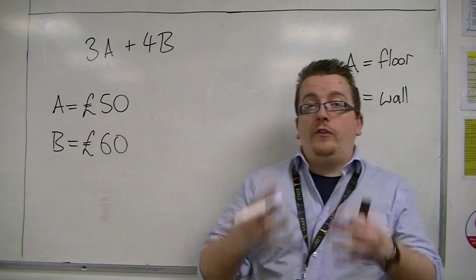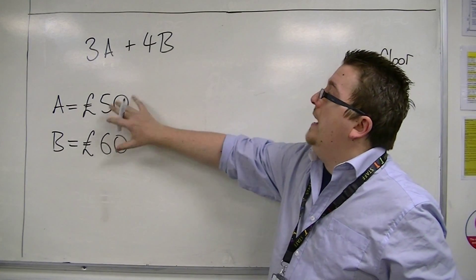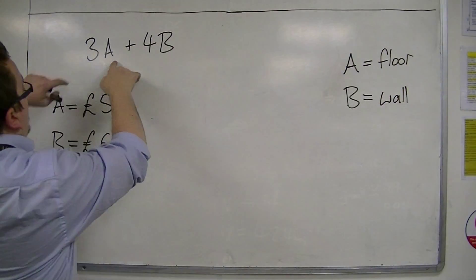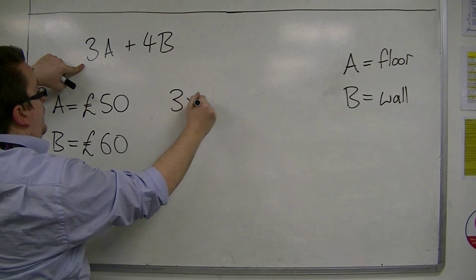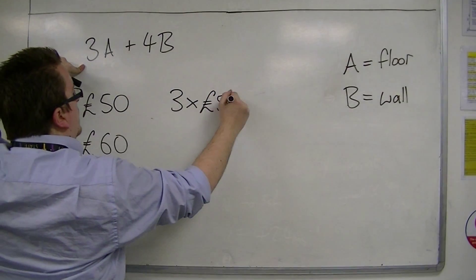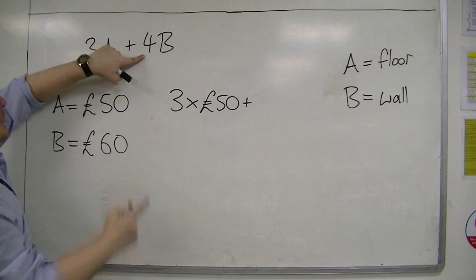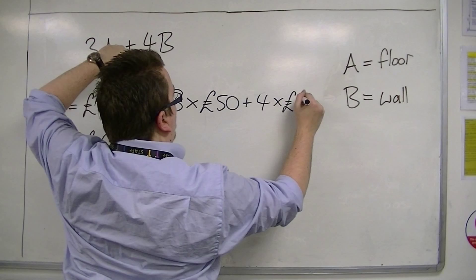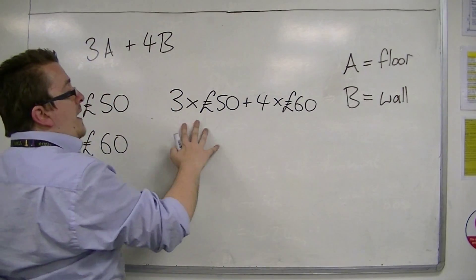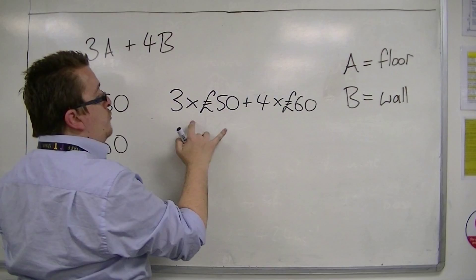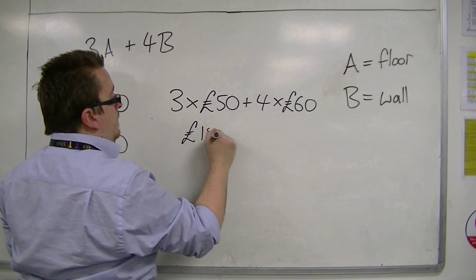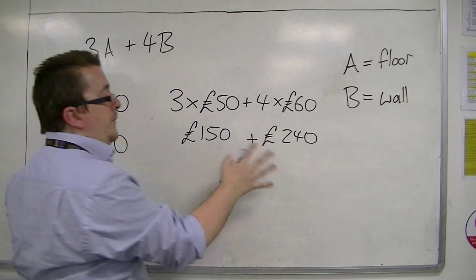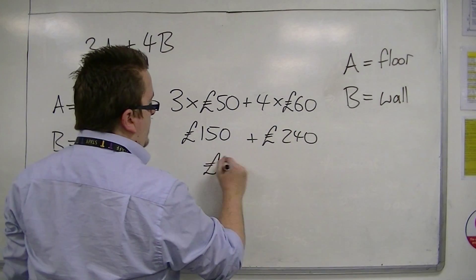We substitute these numbers in place of A and B. So instead of just having A, I now have three lots of £50, three lots of A, plus four lots of B, so four lots of £60. And then I add this together. Three fifties is £150. Four sixties are £240. So combining those two, I'm going to have £390 in total.